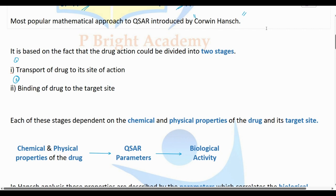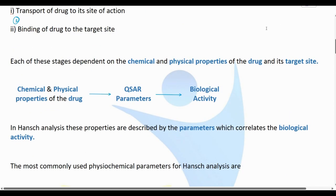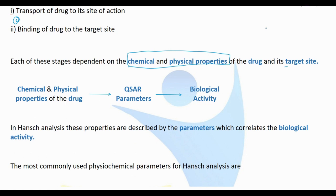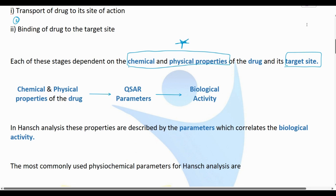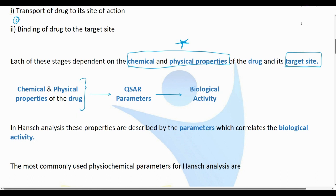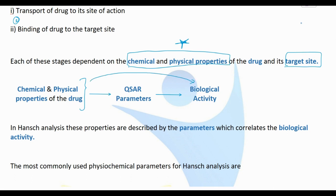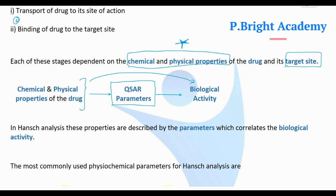We correlate the chemical and physical properties of the drug available on a target site. The biological activities are available on a target site, and the quantities are available on a target site. The QSAR parameters we have already discussed are the important parameters available on a target site.